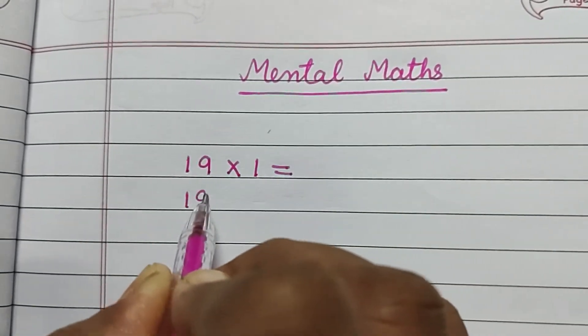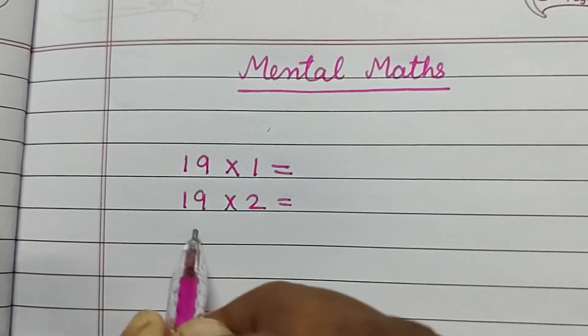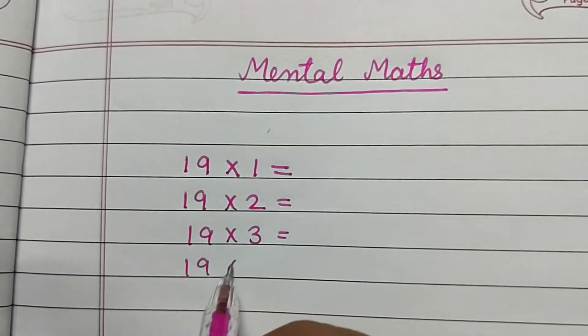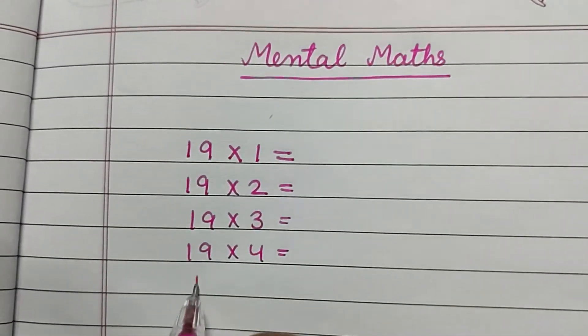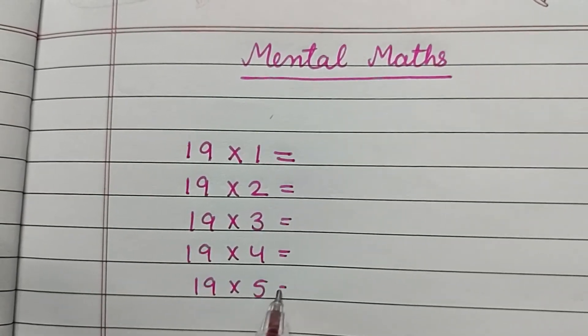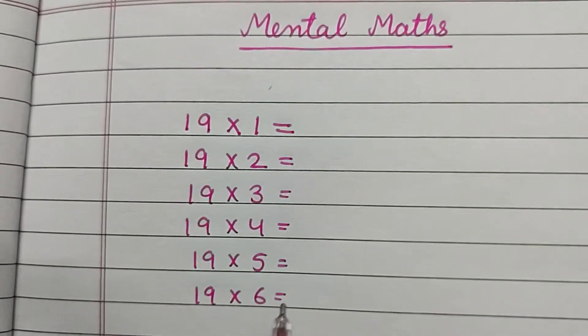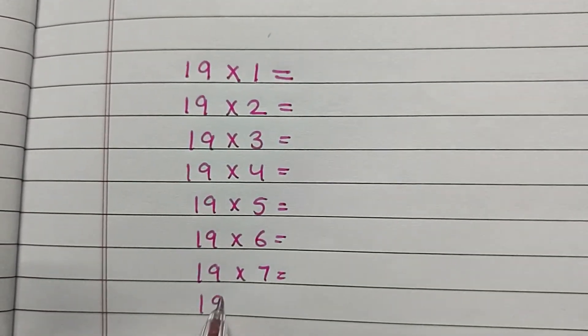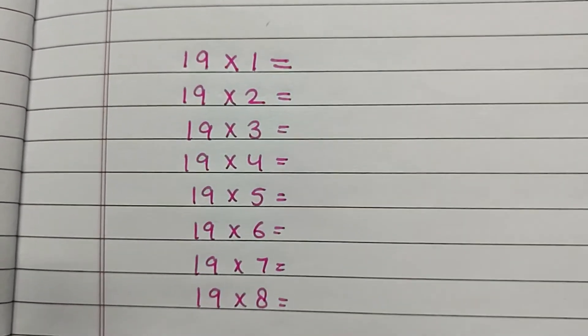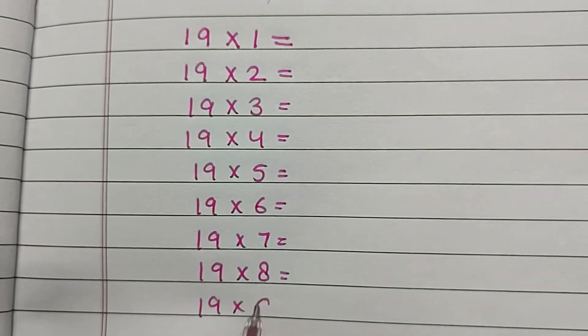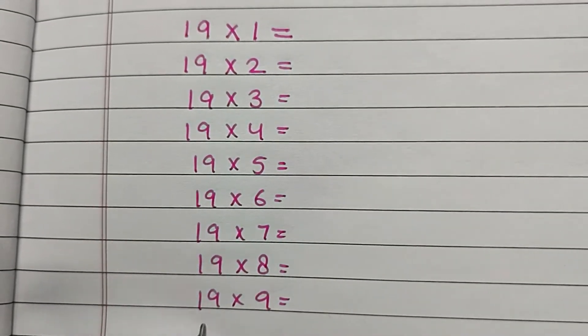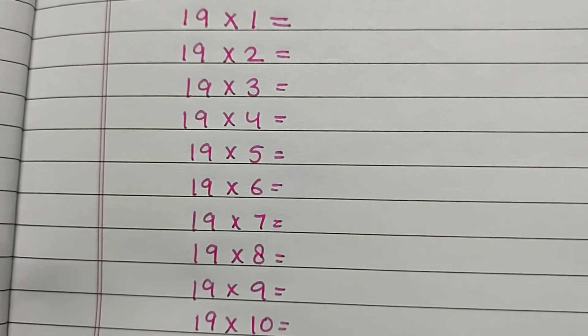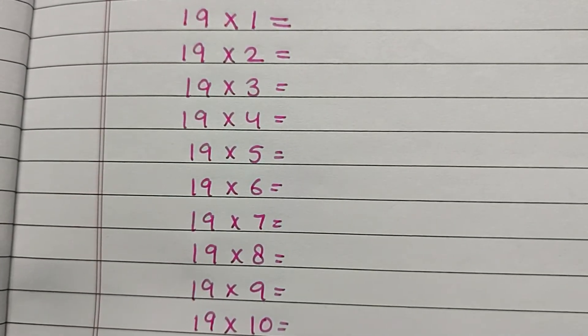First, we will write 19 into 1, 19 into 2, 19 into 3, 19 into 4, 19 into 5, 19 into 6, 19 into 7, 19 into 8, 19 into 9, and 19 into 10.